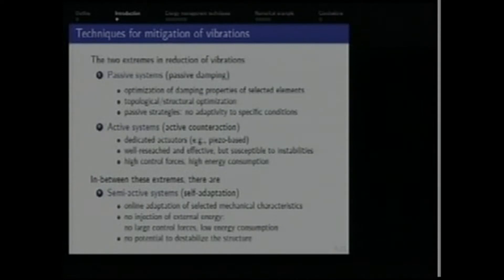When you think about mitigation of vibrations, we have two extremes. On one hand, we have passive systems, and on the other hand, we have active systems. In passive systems, we have no actuators. All we can do is perform a certain topological optimization of the structure and optimize damping properties of its elements. In active systems, we have the principle of active counteraction to vibrations performed by dedicated actuators. These systems are very urgent and, as we have seen in the first lecture, very effective, but it comes at the cost of relatively high control forces and potential for instabilities in case of failure.